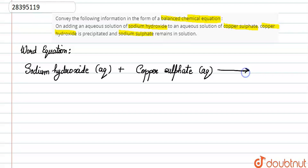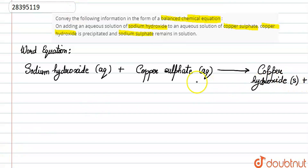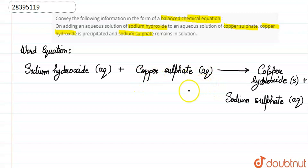Word equation में आगे arrow से denote करके हम लिखेंगे कि copper hydroxide precipitate हो रहा है — मतलब solid form में है। और further हमारा sodium sulfate remains in solution, मतलब जो sodium sulfate है वो aqueous form में ही present है। तो यही होगी हमारी rough word equation। अब इसमें जो chemical formulas use हुए हैं — sodium hydroxide, copper sulfate, copper hydroxide, sodium sulfate — इन सबके cations और anions से हम इनका chemical formula बनाते हैं।